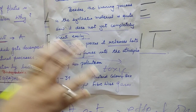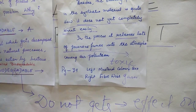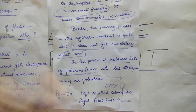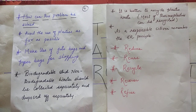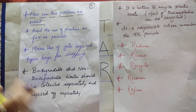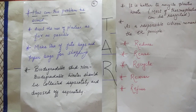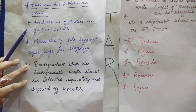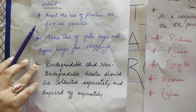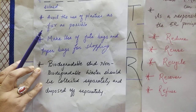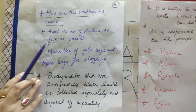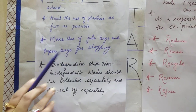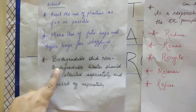Now, knowing these problems, what steps can we take to stop environmental pollution and save our nature? First, avoid the use of plastic as far as possible — wherever you think plastic can be avoided, avoid it. Wherever it can be recycled, go for that.